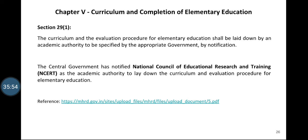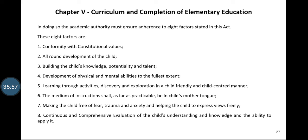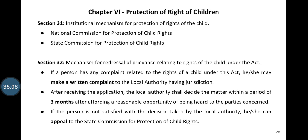Chapter 6 deals with the protection of rights of children. Section 31 provides an institutional mechanism for protection of rights of the child through the national or state commissions for protection of child rights. Similarly, Section 32 provides a mechanism for redress of grievances relating to the rights of the child under the Act.